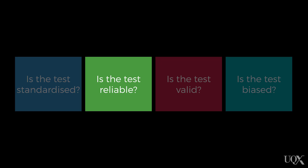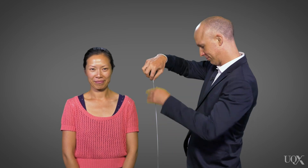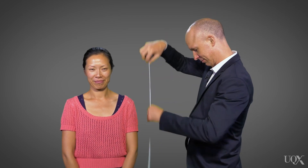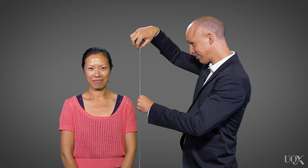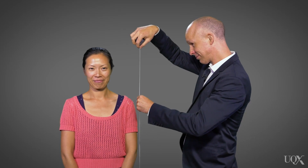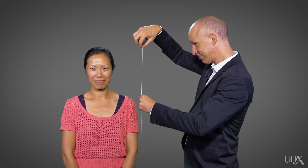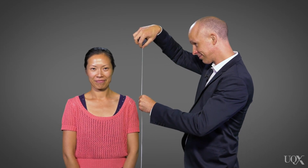The next question we should be asking is whether the test is reliable. If we wanted to measure something, for example, the height of this person, we could use a tape measure like this. According to this tape measure, her height is about 170 centimetres.